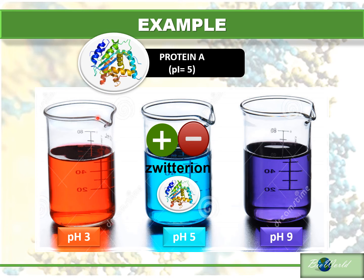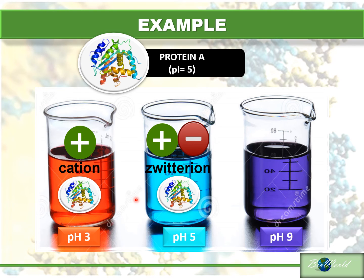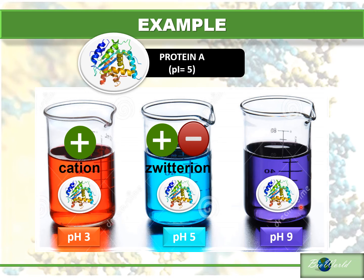But if I take this protein and put it in my beaker with solution pH 3, changes happen. pH 3 is below PI, so the protein will become positively charged — it becomes a cation. Likewise, if I place the protein in my beaker of pH 9, since pH 9 is above PI, the protein will become negatively charged — this is an anion. So this is the significance of isoelectric points, in which a neutral protein can become either positively charged or negatively charged.